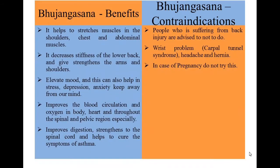Release your breath while getting back to the starting position. Bhujangasana benefits: It helps to stretch muscles in the shoulders, chest, and abdominal muscles. It decreases stiffness of the lower back and gives strength in the arms and shoulders. Elevates mood and helps keep stress, depression, and anxiety away. Improves blood circulation and oxygen in the body, heart, and throughout the spinal and pelvic region. Improves digestion, strengthens the spinal cord, and helps cure symptoms of asthma.